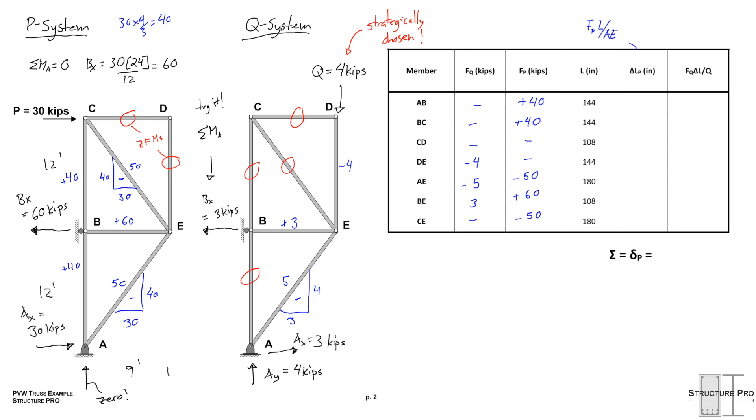Next, we have to deal with this delta LP column. We can recall that delta LP is FPL over AE. From the previous slide, AE is 2 inches squared times 9,000 kips per inch squared. You can check my math, but I've solved all these values for you. And we notice that anything with an FP of 0, it's also going to be 0 here.